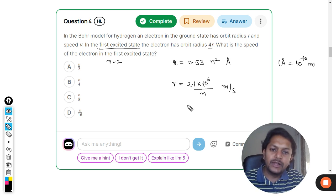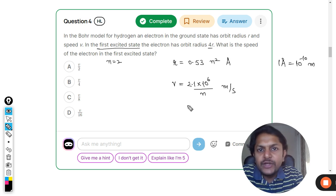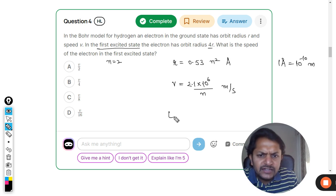So this is the velocity of the electron in its particular shells. If n is equal to 1, n is equal to 2, n is equal to 3, you can find the velocity by using this method.